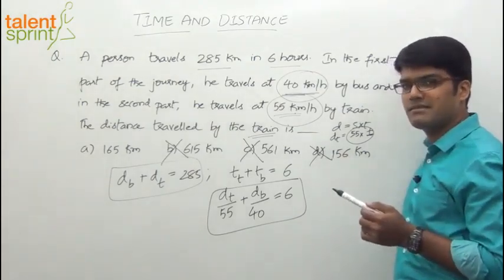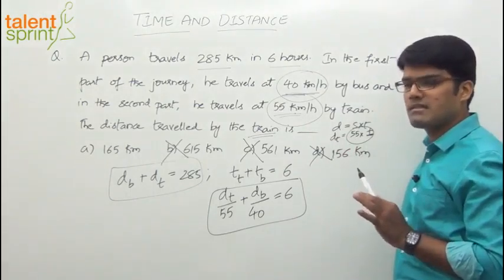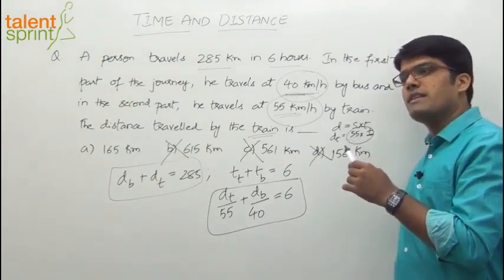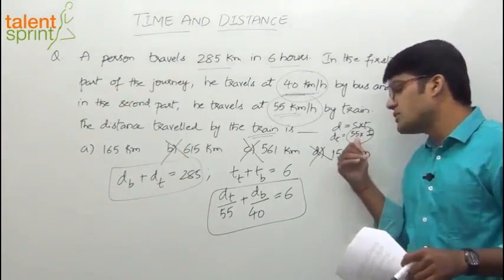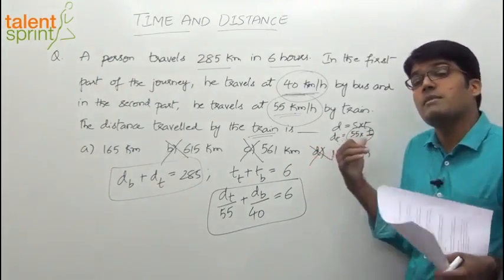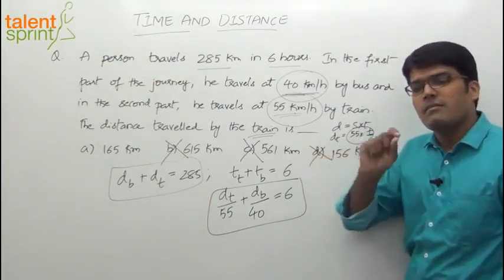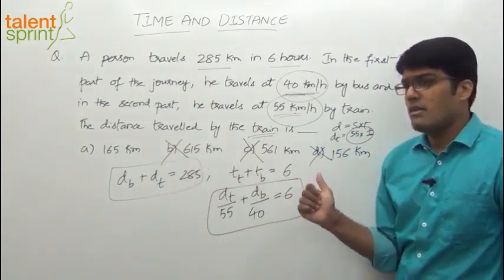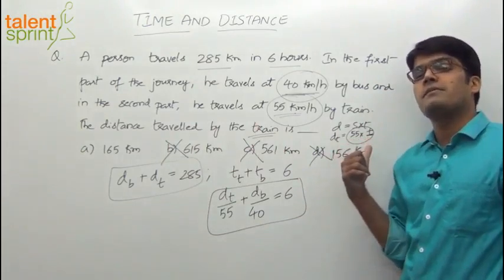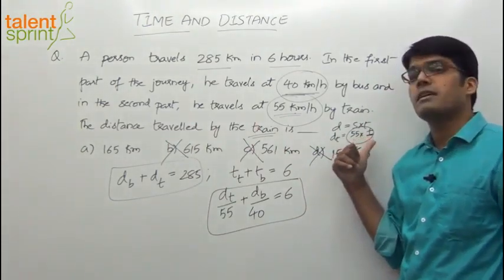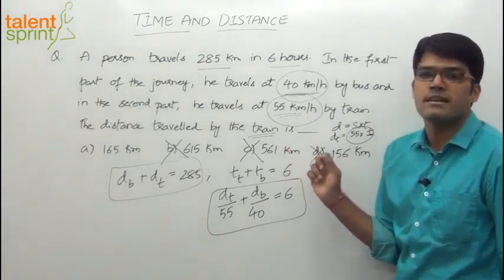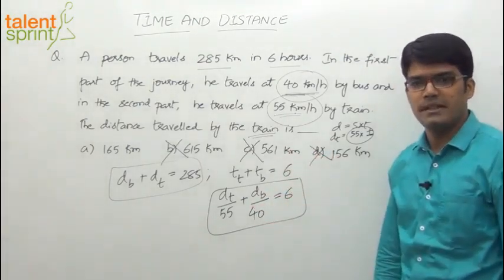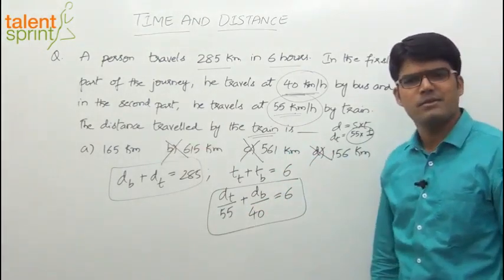So that must be a probable answer. The point is not that it should always be an integer multiple. It can be any multiple of 55. We are first trying with integer multiples. For example, 55 into 3 is 165. It can be 3.5. Let's say the time taken is 3.5 hours. Then 55 into 3.5. In that case, maybe it is difficult for you to directly look at the option and decide. But when it is possible, why not? It has to be a multiple of 55, so 165 should be the answer.